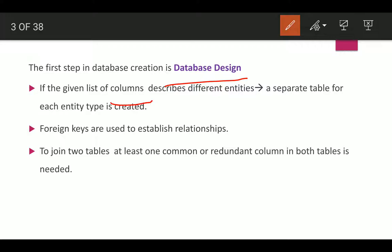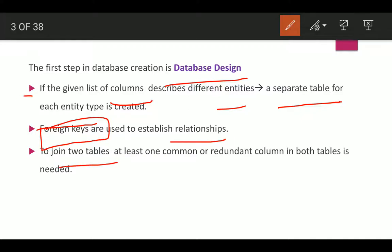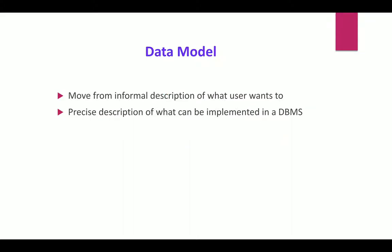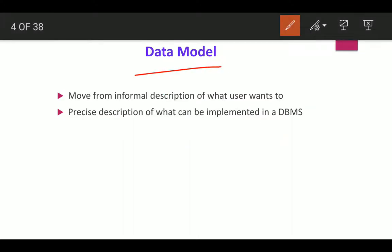In database design, you list out columns and entities over a table, establish foreign keys and relationships, and determine how to join two tables. This helps create what we call a data model — moving from an informal description of what the user wants to a precise description of what can be implemented in a DBMS.